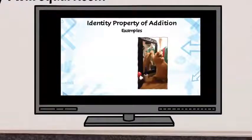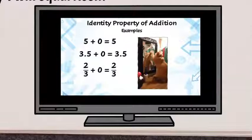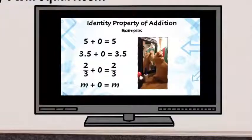So some examples are 5 plus 0 equals 5. 3.5 plus 0 equals 3.5. 2 thirds plus 0 equals 2 thirds. And m plus 0 equals m.